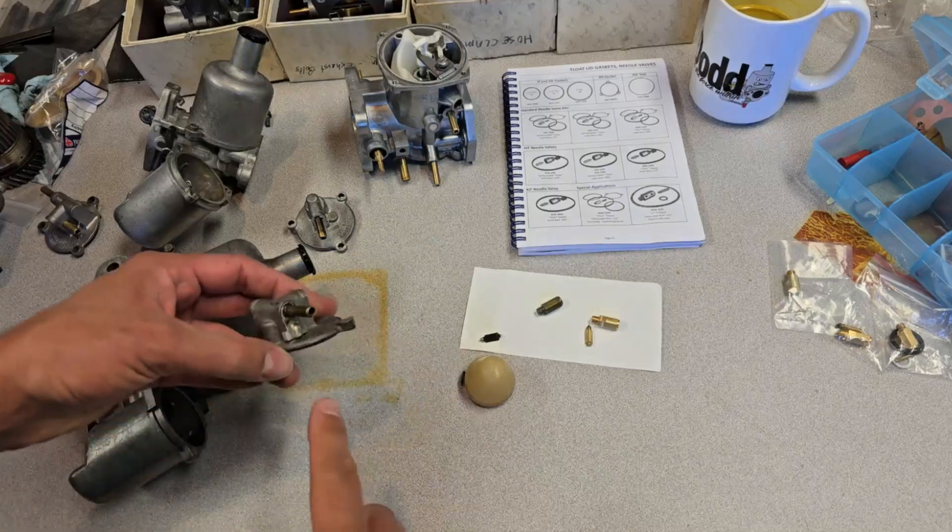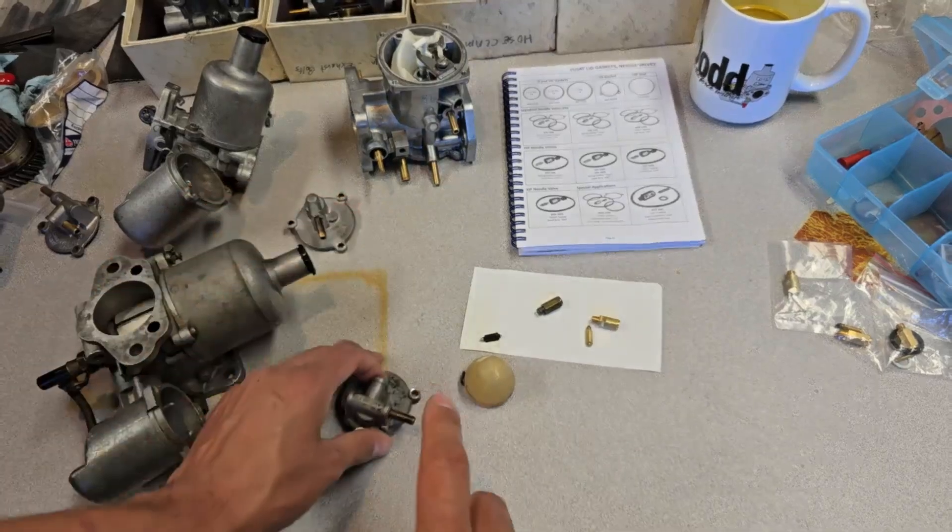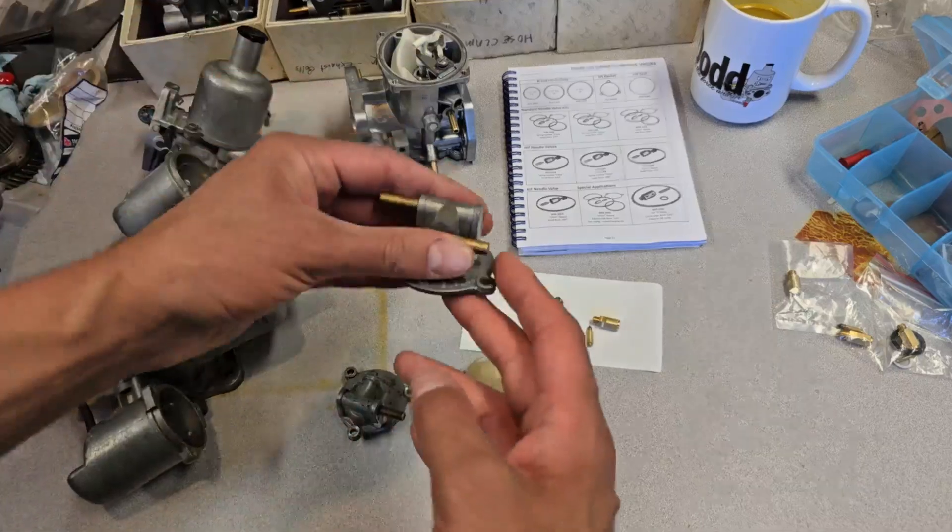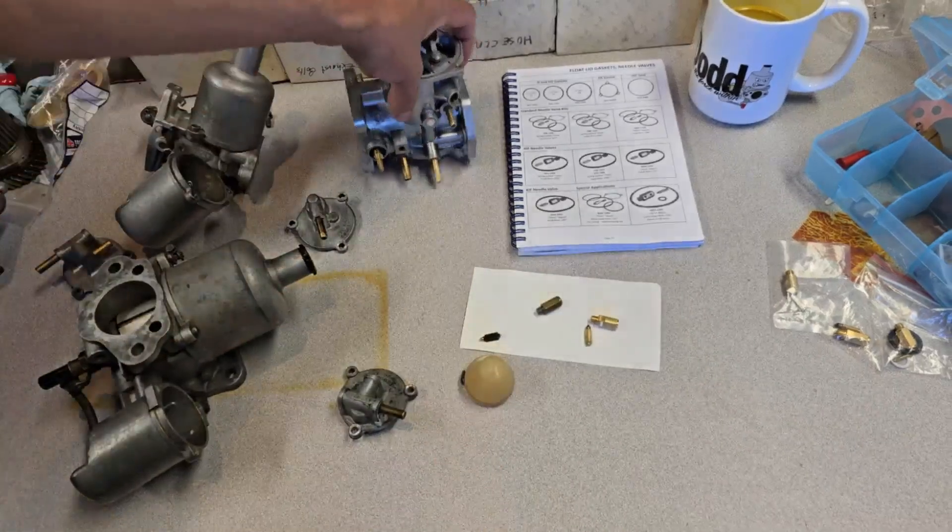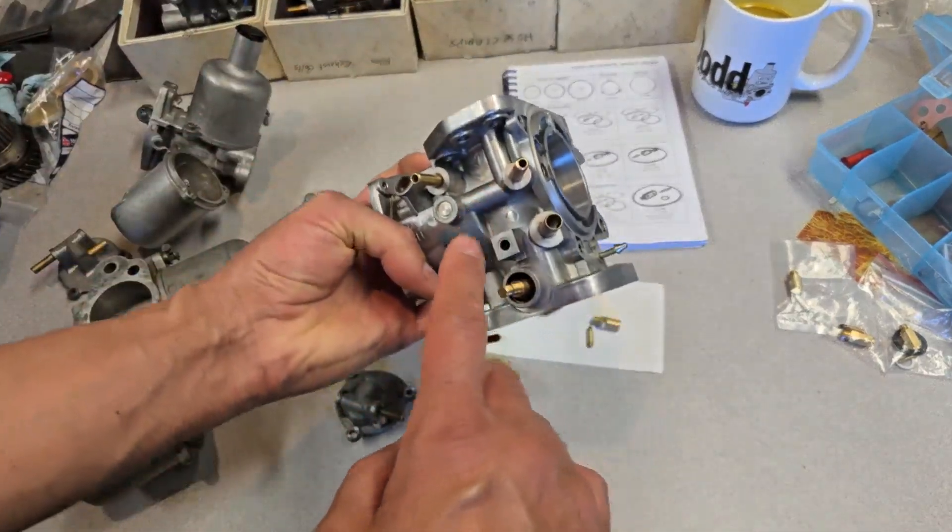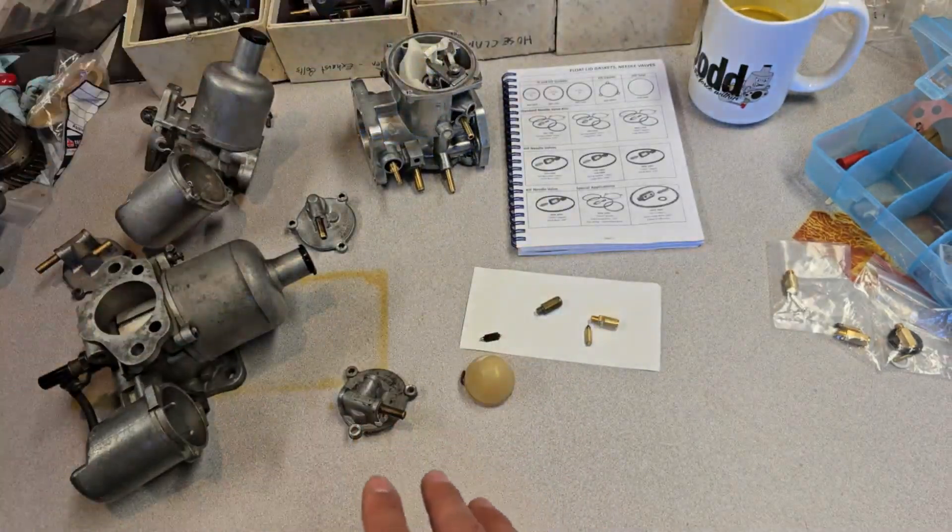So many of you have experienced this where you go to start your car and fuel either leaks out from underneath this little cover here, or if you have an HS4, it'll leak out of this overflow pipe, or if you have an HIF carburetor, you may have fuel leaking out of here. All these problems are related, and there's four main categories.